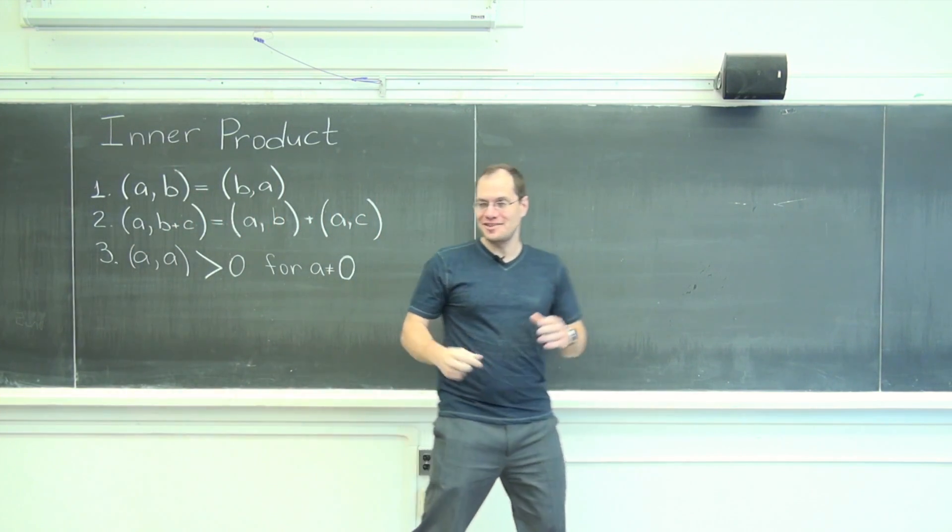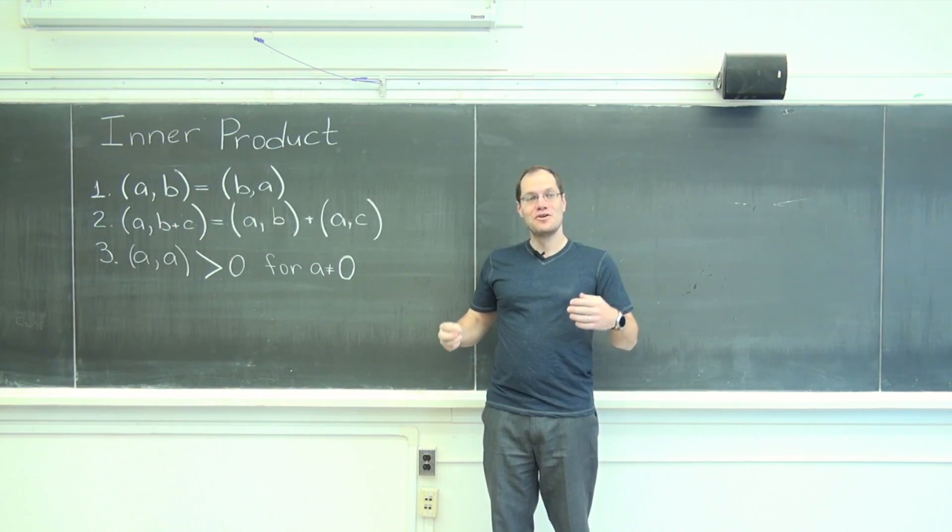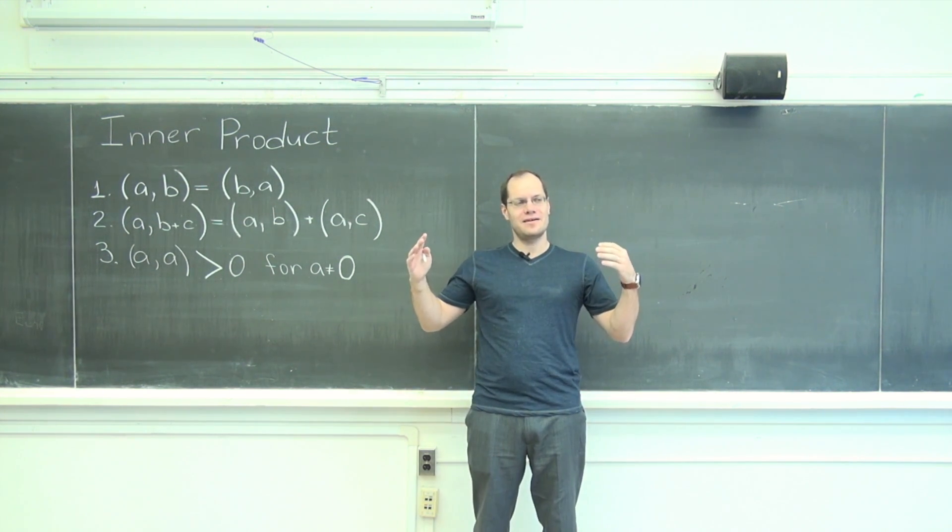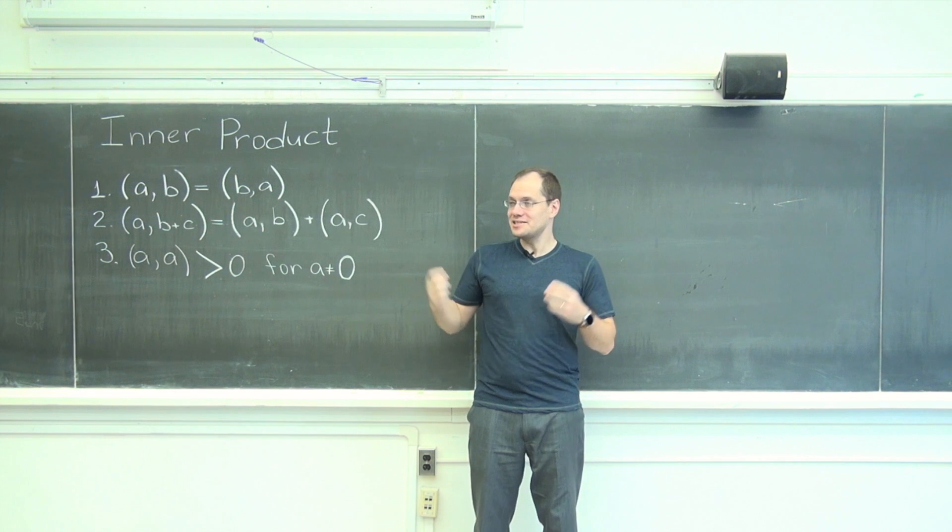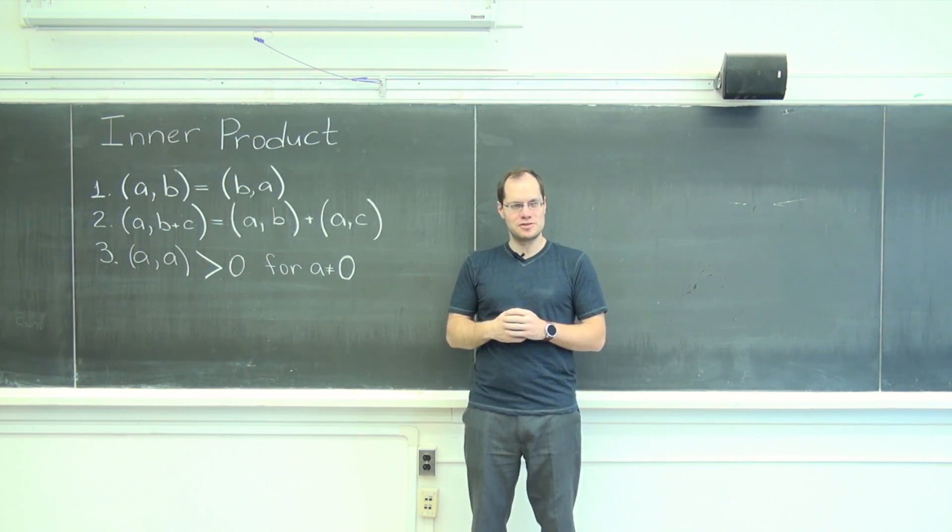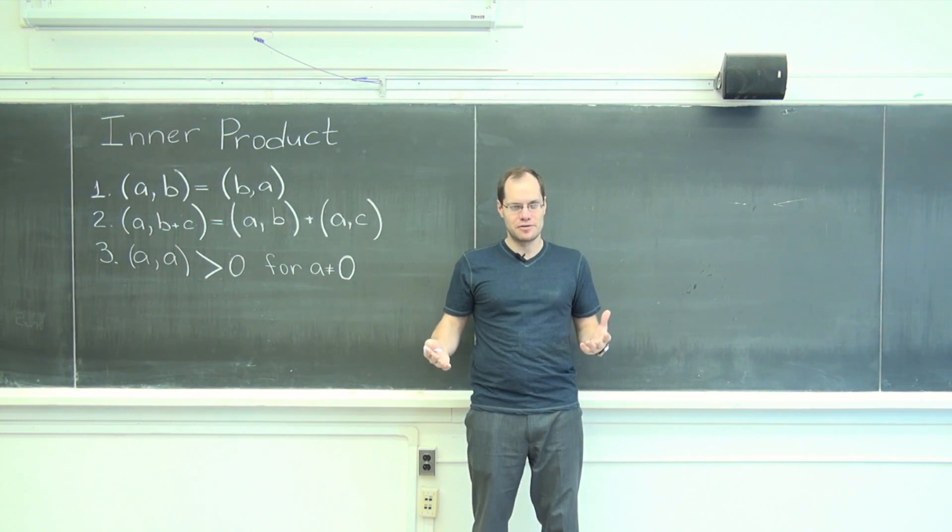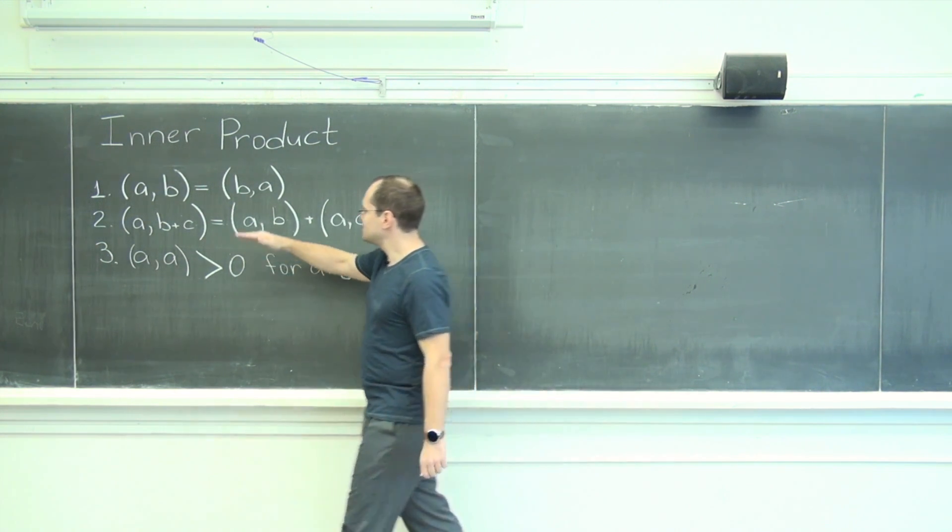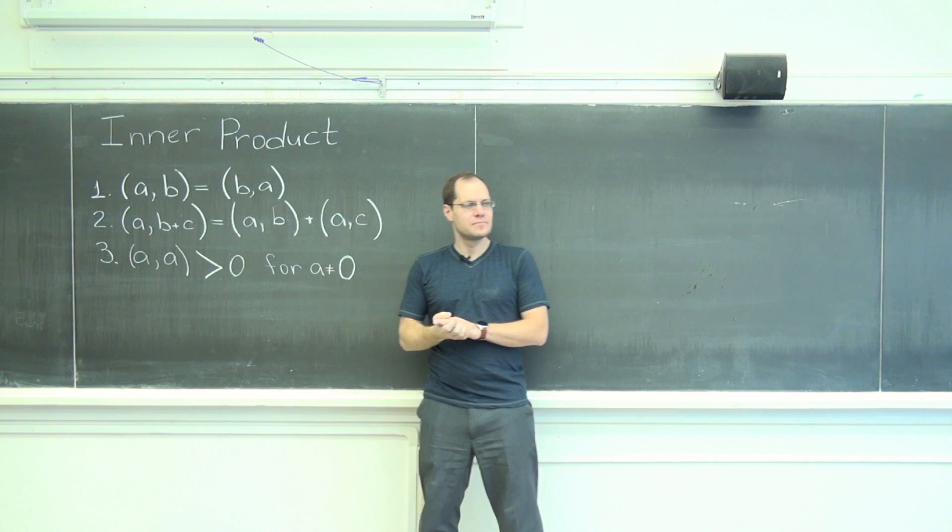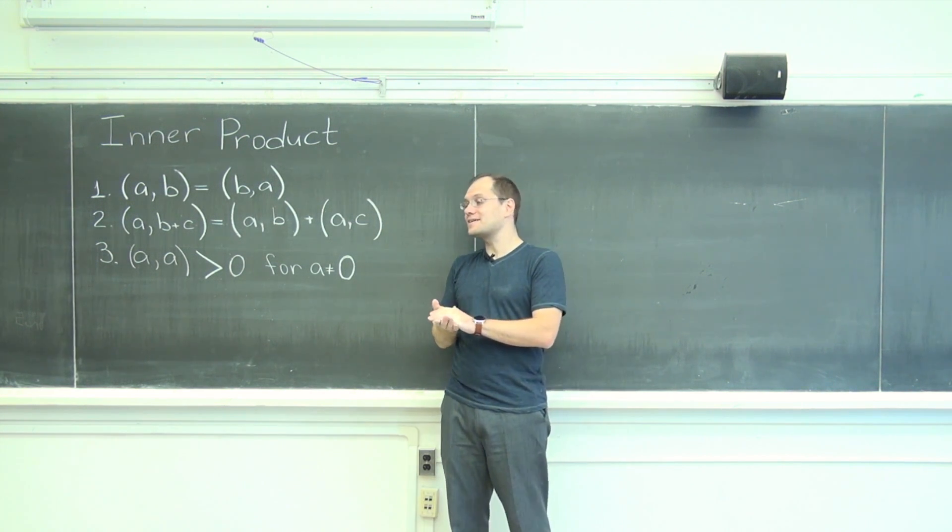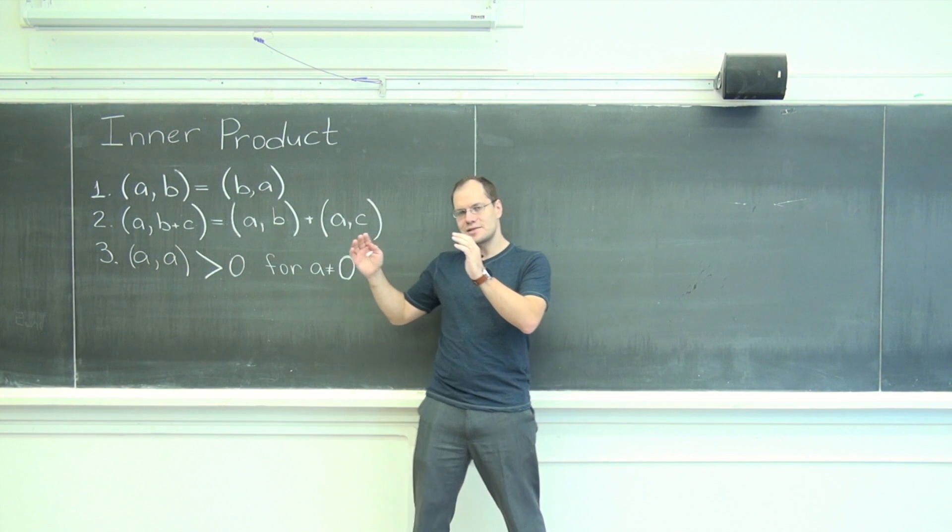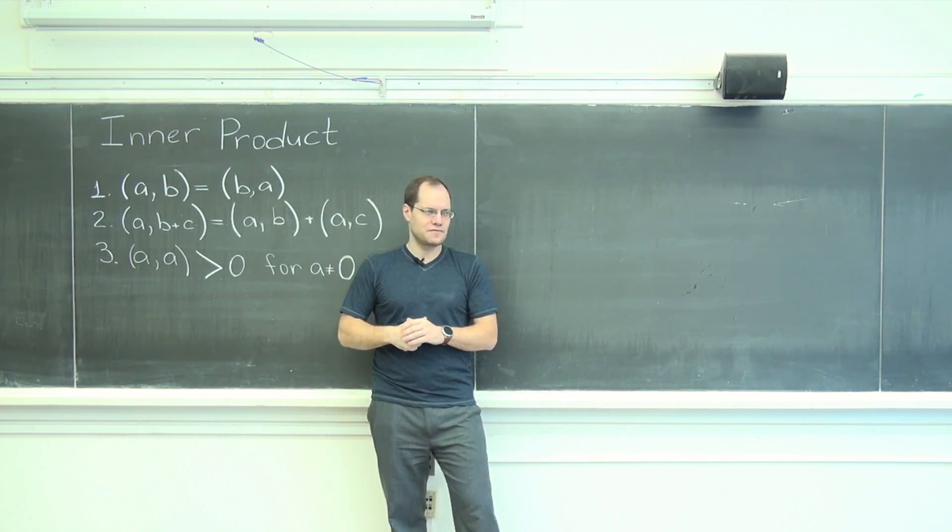Inner products. At the end of last lecture we came to the realization that if we come up with some operation that takes two vectors as inputs and produces a number, as long as that operation satisfies these three axioms, then it can be used as an effective inner product which parallels the concept of the dot product for geometric vectors.